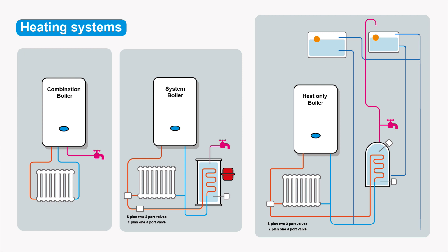Let's start at the beginning with the various different types of heating system. All three systems can control the heating and hot water. The combination boiler heats hot water on demand - when you turn the tap on the boiler will start and heat the water. You can have timed thermostatic controls for your heating, radiators, or underfloor heating. The combi boiler is fed from a cold main and the heating and hot water are completely separate.